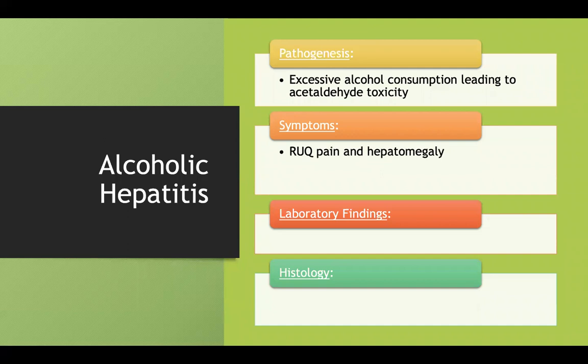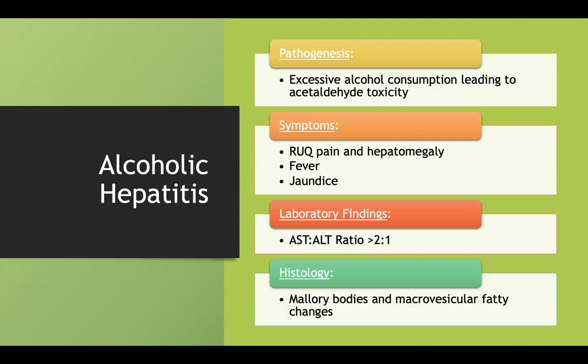In alcoholic hepatitis you can also get jaundice. Similar to other alcoholic liver disease, you'll have that classic AST to ALT ratio greater than 2:1. On histology, you'll see those same Mallory bodies and macrovesicular fatty changes we saw in alcoholic liver disease.